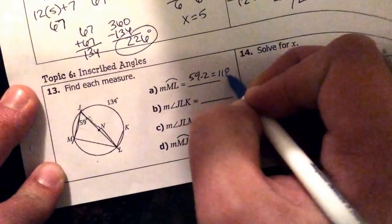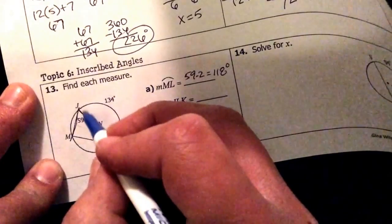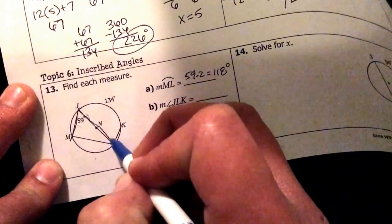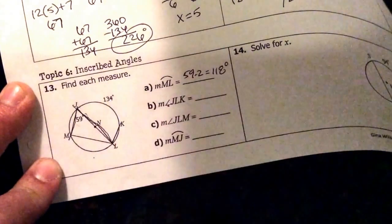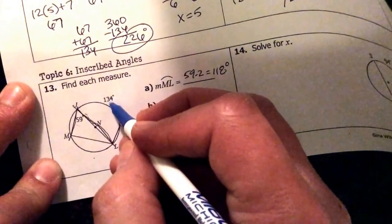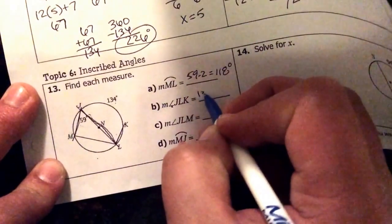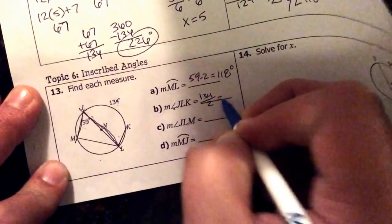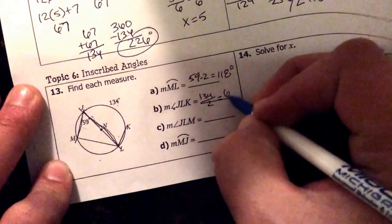It's going to be 118 degrees. Measure of angle JLK. JLK is right here. That's the inscribed angle that has the intercepted arc of 134. If I'm given the arc, I cut it in half to get my angle. 67 degrees.